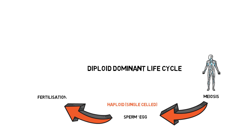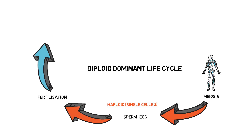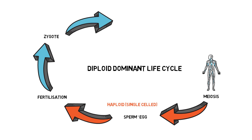Fertilization involves a fusion of two of these gametes, usually from different individuals although not always, and this restores the diploid state. So this organism spends most of its life in a diploid dominant life cycle, and that's the one everyone is mostly aware of.